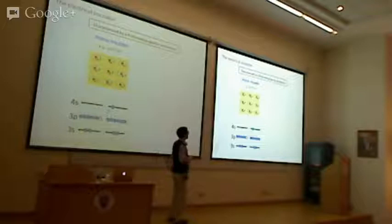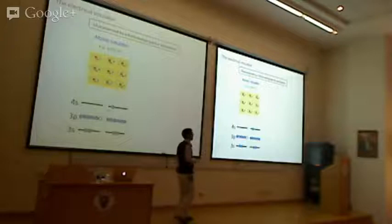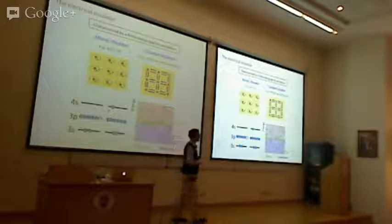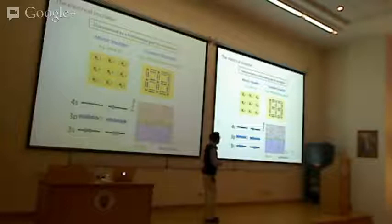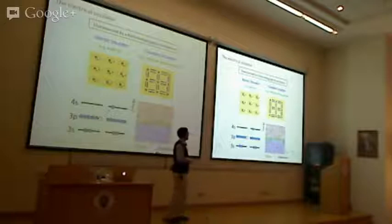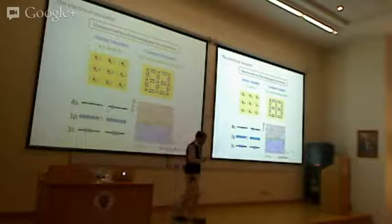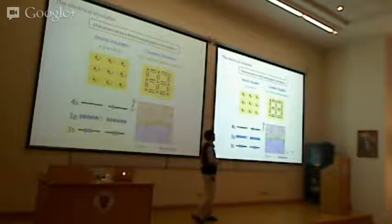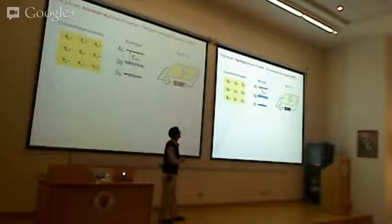Before explaining topological insulators, I want to discuss the quantum Hall insulator, which was discovered around the 1980s. Understanding it helps in understanding topological insulators. In the quantum Hall effect, you take a two-dimensional electron gas — a sheet of electrons — and measure its transport properties. These experiments are done in a very high magnetic field, tens of Tesla, and you study how electrons behave.